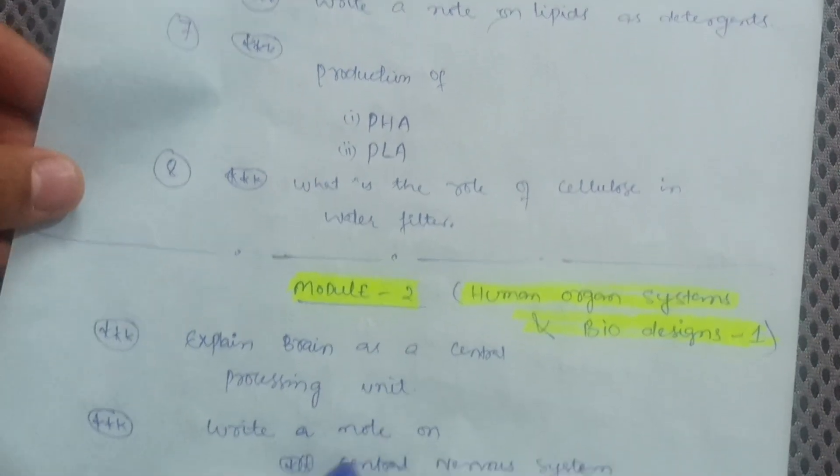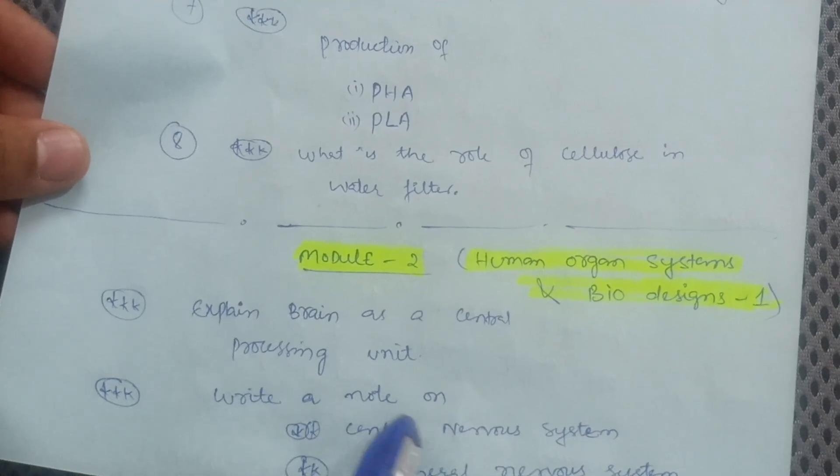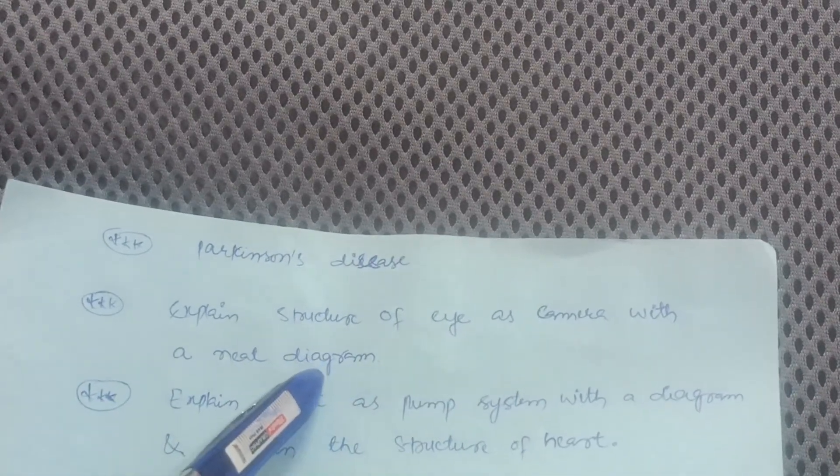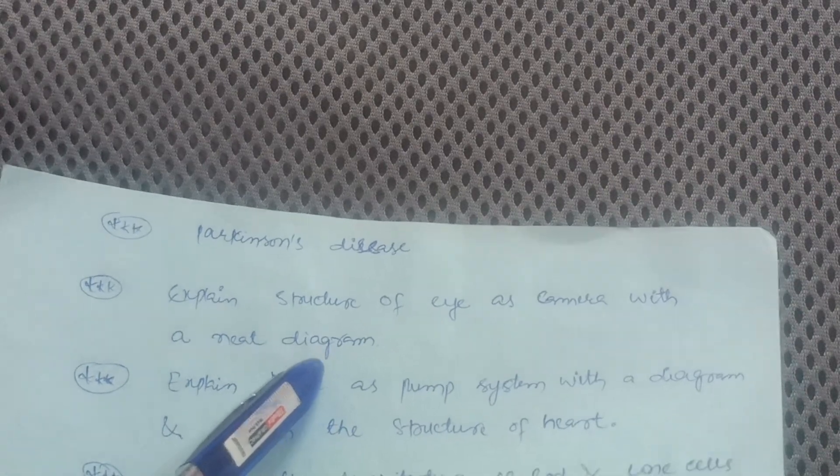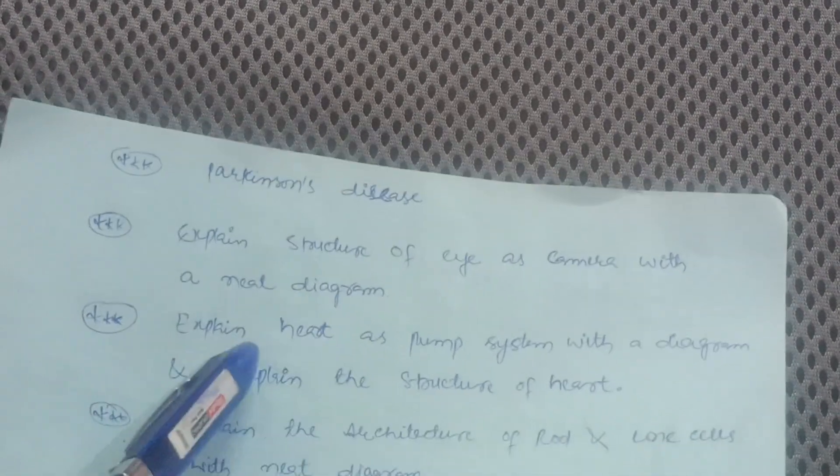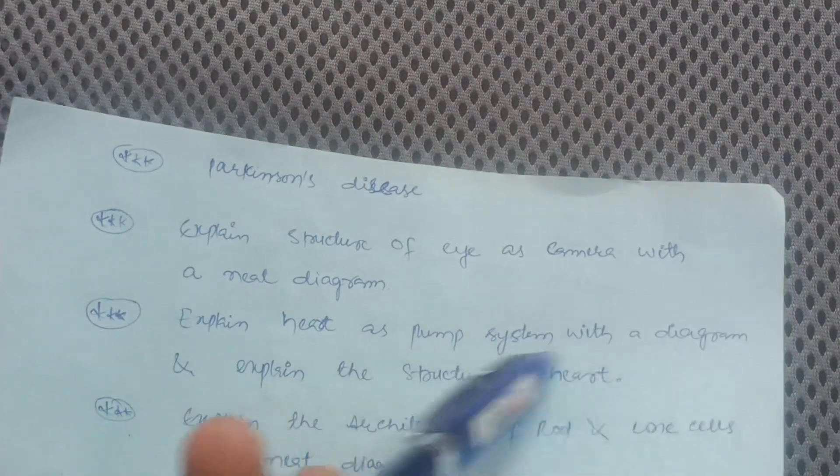First question which will be definite: explain brain as a central processing unit CPU and write a note on central nervous system, peripheral nervous system. Then Parkinson's disease. Explain structure of eye as a camera with a neat diagram. Focus on this also, it's the most important one and you have to draw neat sketches for these type of questions.